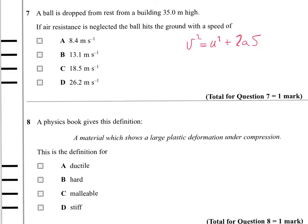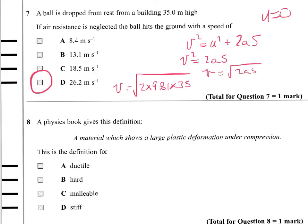We can simplify it further. Because the ball is dropped, we can say that U must be nothing. As a result, this equation becomes V is the root of 2AS, and that comes to 26.2, so answer D.